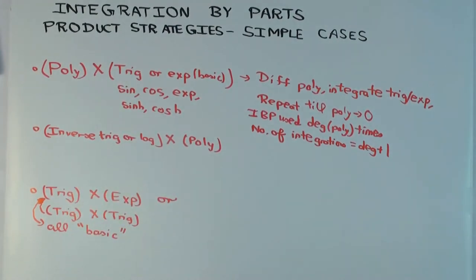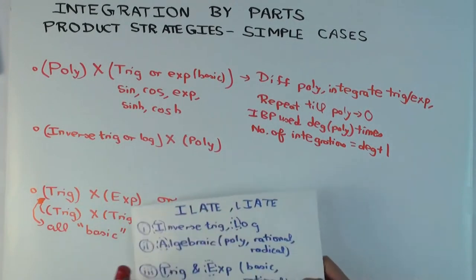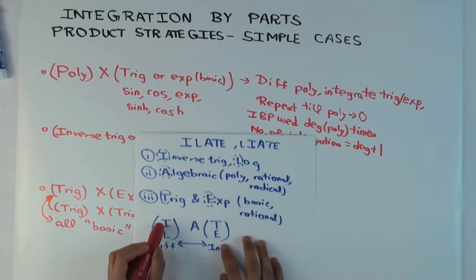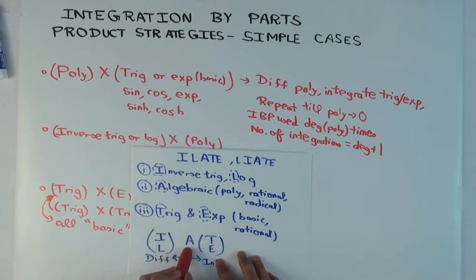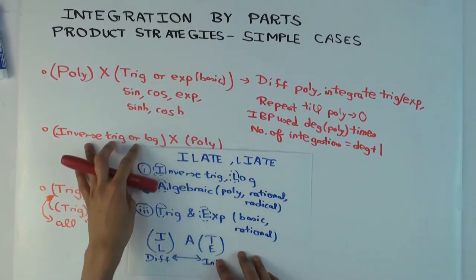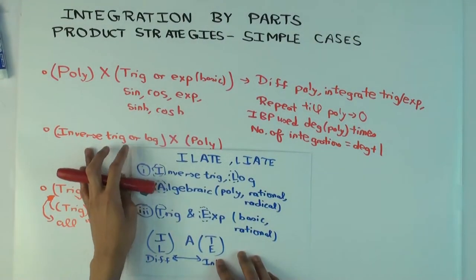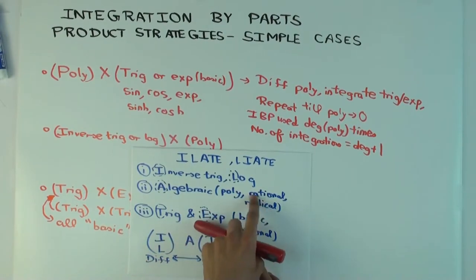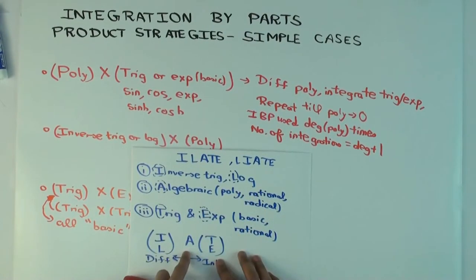Now the next step I want to consider is inverse trig or log times polynomial. Inverse trig or log times a polynomial. So what does the precedence rule tell you? What do you differentiate? Inverse trig or log, and you integrate the polynomial. Does that make sense? If you think about it, the inverse trig or log, when you differentiate, where do you land up? You land up in the algebraic domain. You don't quite get a polynomial, you get a rational function or a radical, but you still land up in the algebraic domain.